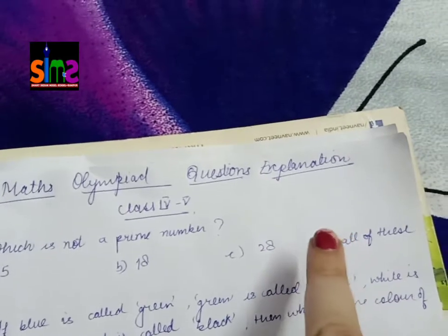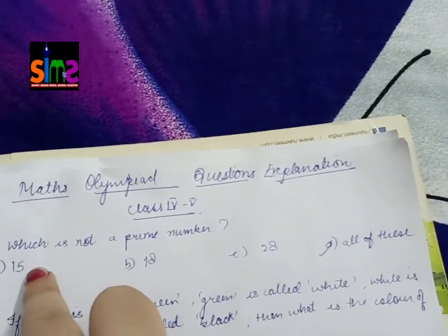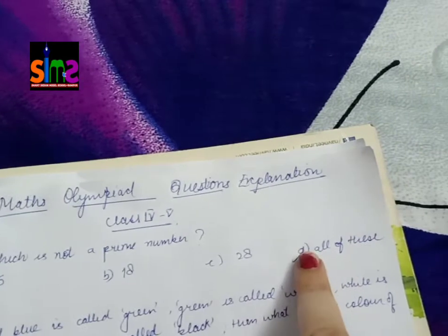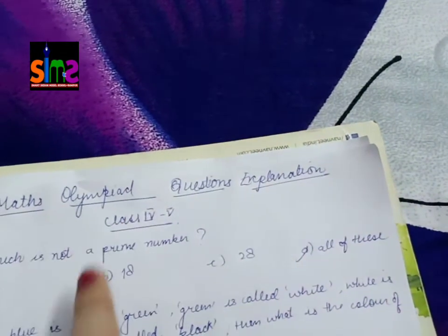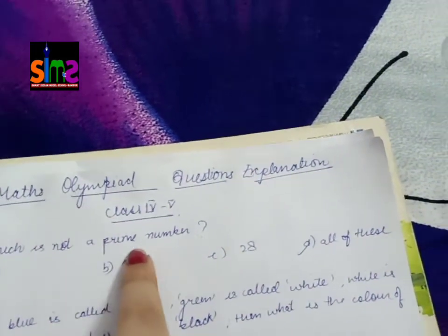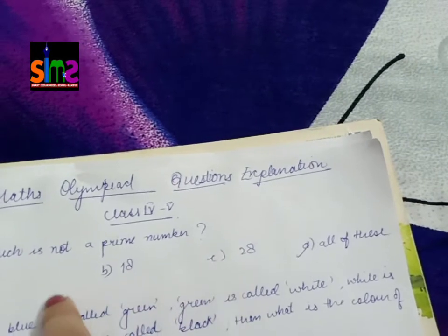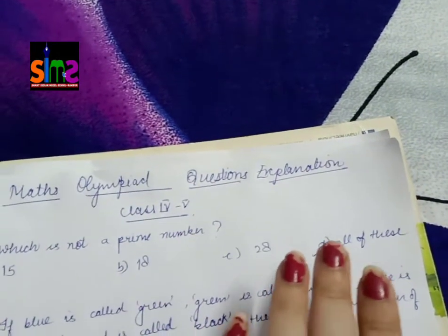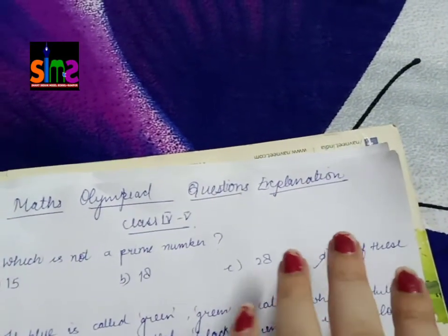Option D is all of these. When you have a case like this where all three numbers are not prime numbers, the answer is all of these. If the question asked which is a prime number and all options were prime numbers, only then would you click that option.